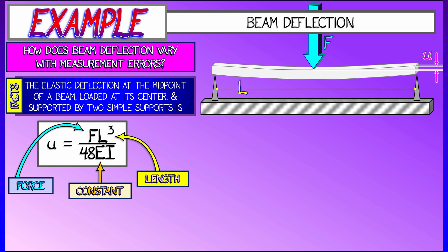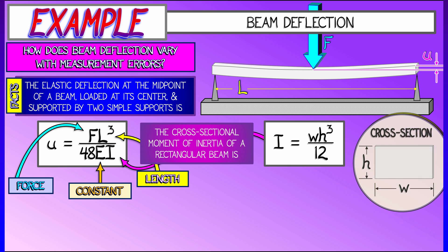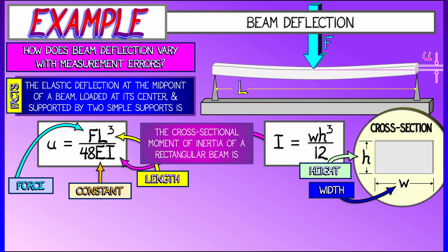That deflection u is given by fl cubed over 48 times e times i. F is the force. L is the length of the beam. E is a constant related to the elasticity of the material. We're going to forget about that. And that last term, i, is a cross-sectional moment of inertia. Let's assume it's a rectangular beam of width w height h. Then that moment of inertia is given by w h cubed over 12.